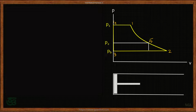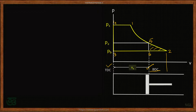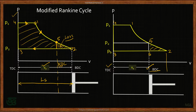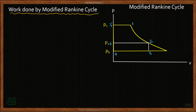The key advantage is that the length of the stroke is reduced to point 5, so the new BDC is closer, the piston size is reduced, and the engine becomes more compact. This type of cycle — in which expansion is not continued to the end but is truncated or terminated at some intermediate point like point 5 — is called the modified Rankine engine cycle. The area enclosed by the new cycle represents the work done, and it is slightly less than the full Rankine cycle.